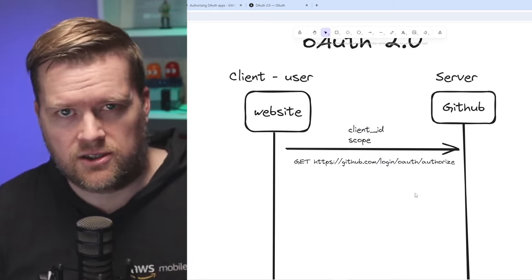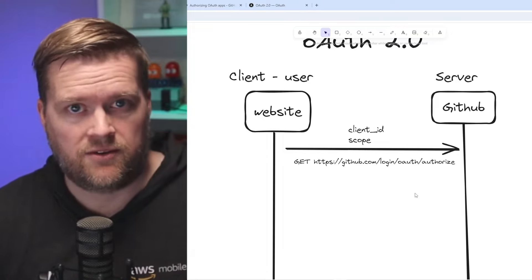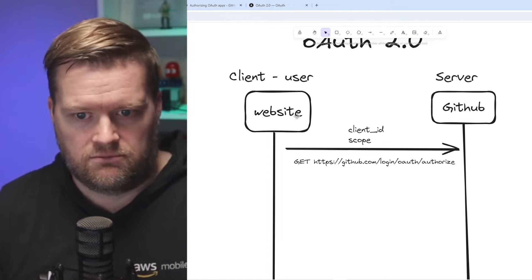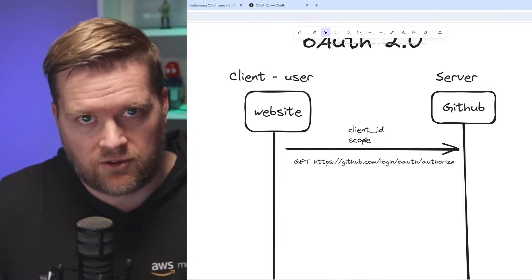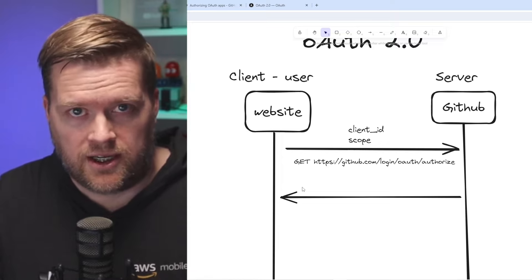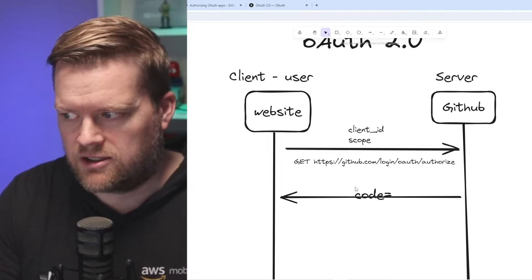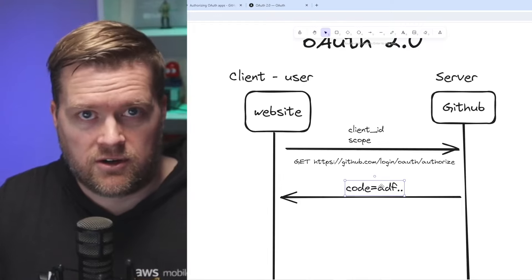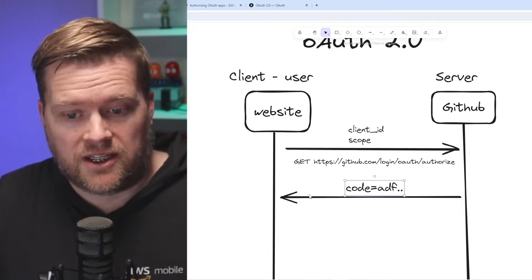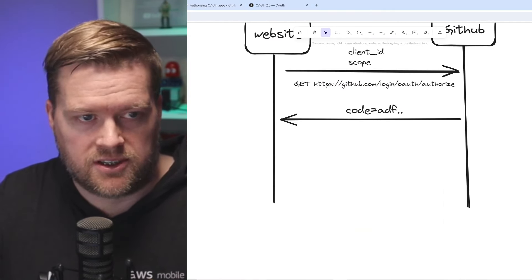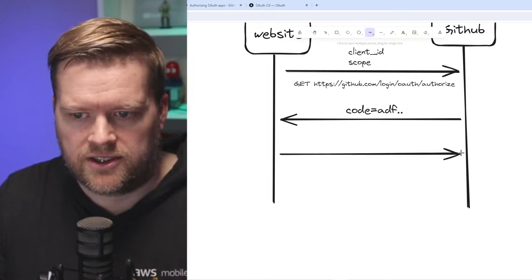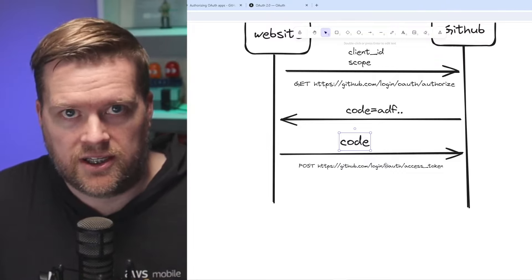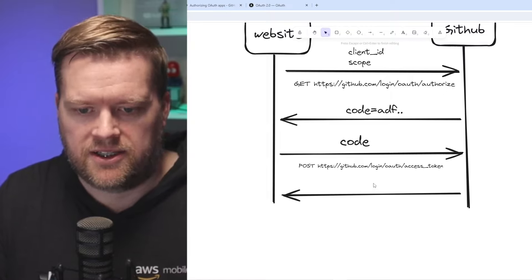What happens on the server side is the GitHub site will pop up. If you haven't logged in, it'll bring you to a login page and then ask: do you authorize this website to grab this information? It'll tell you what information it'll have — that's what scope is. After you authorize and log in, GitHub returns a code. This code will be important because our client is going to use it to get something called an access token. You have to make another call — a POST — sending the code to the access token endpoint, which returns back the access token, usually a JWT token.